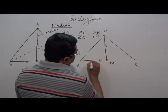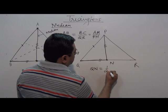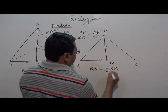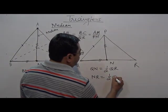Here also, what is QN? This length QN is nothing, it is half of QR. What is NR? NR is nothing, half of QR.